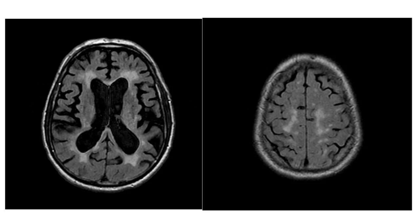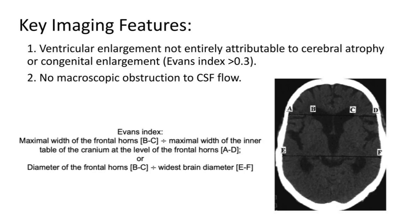Other features of ventricular dilatation include crowding at the vertex, which is often disproportionate to the more lateral subarachnoid spaces such as the Sylvian fissures. Most importantly, there should be no obvious other cause for obstructive CSF flow.